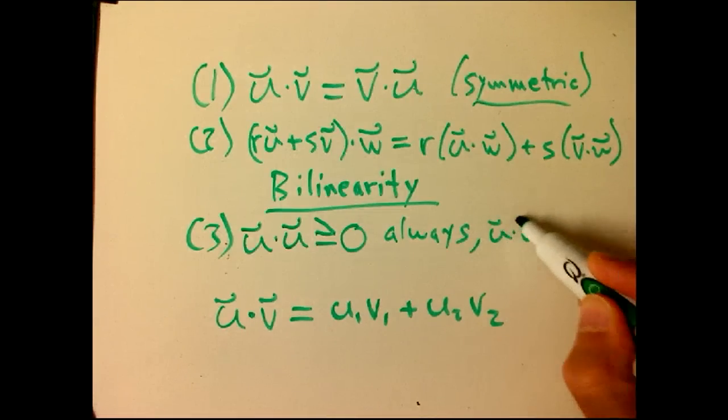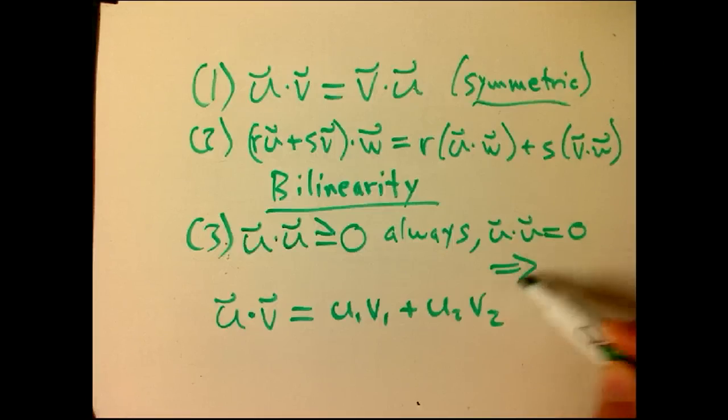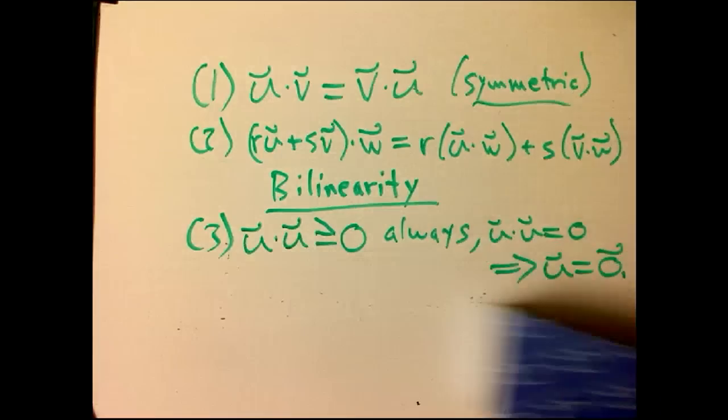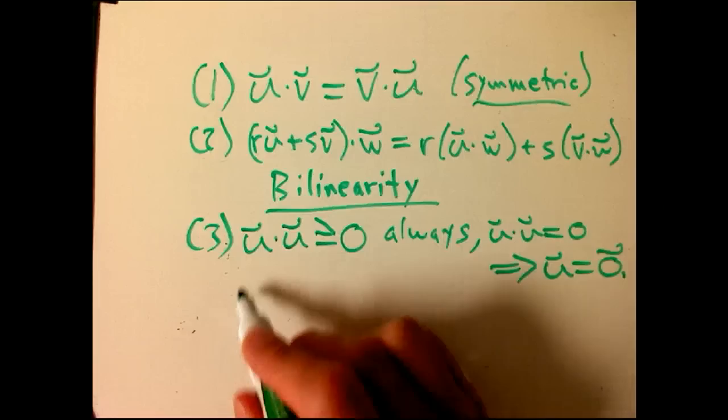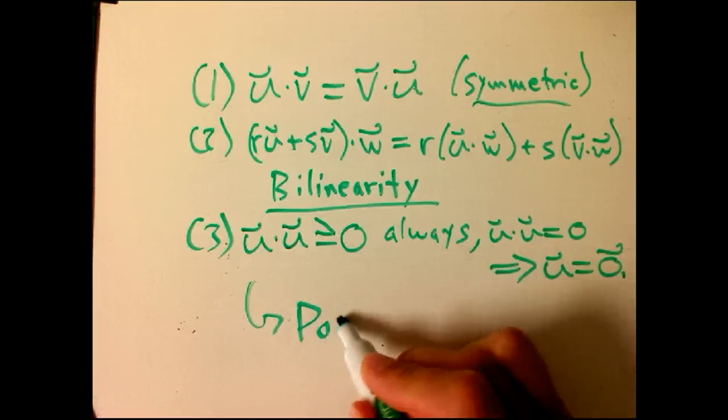And if U dot U equals zero, then it must be that U is the zero vector. And this has a name. Okay, now I can erase the definition because we don't really need it anymore for a while.